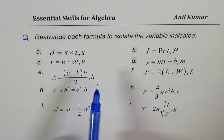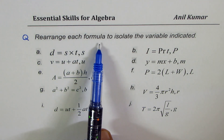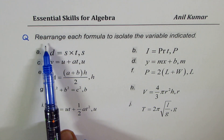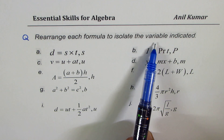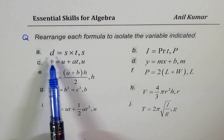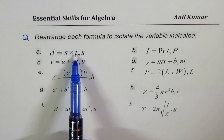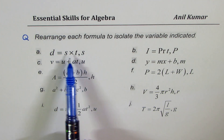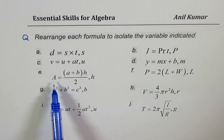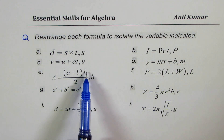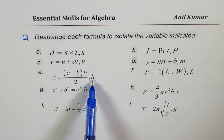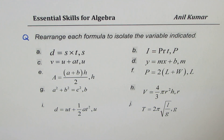When I say isolate each formula, or rearrange each formula to isolate the variable indicated, I mean: if the formula is d = s × t, you need to isolate s — so what is s equal to? Another example: the formula is A = (a + b) × h ÷ 2, and you need to isolate h. I hope that concept is absolutely clear.